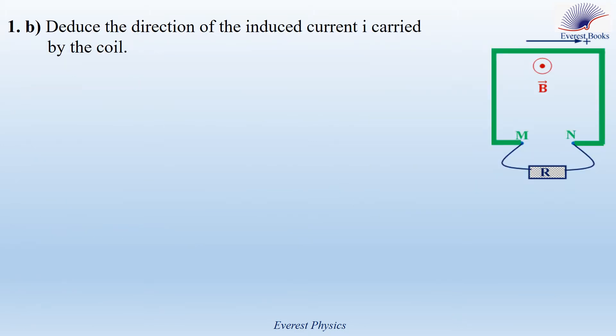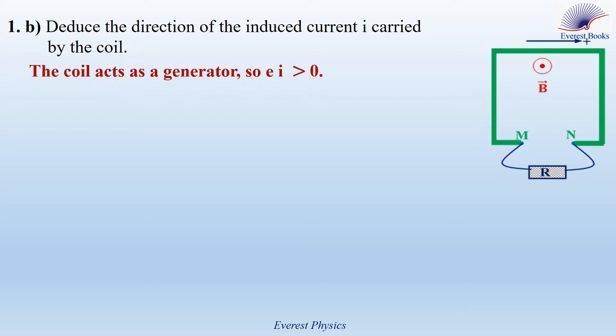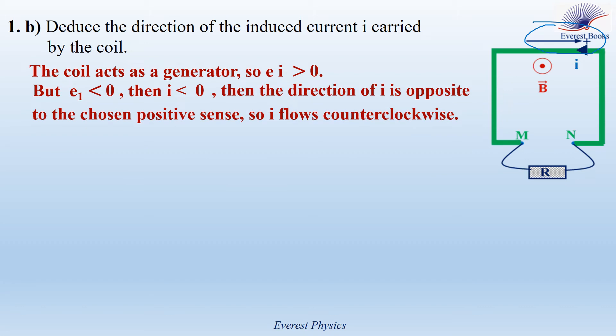Part 1B. Deduce the direction of the induced current. The coil acts as a generator, so E and I have the same sign, meaning E·I is positive. Since E is −0.1 V, which is negative, then I is also negative. The chosen positive sense is clockwise, so a negative current means the current flows counterclockwise — opposite to the chosen positive sense.